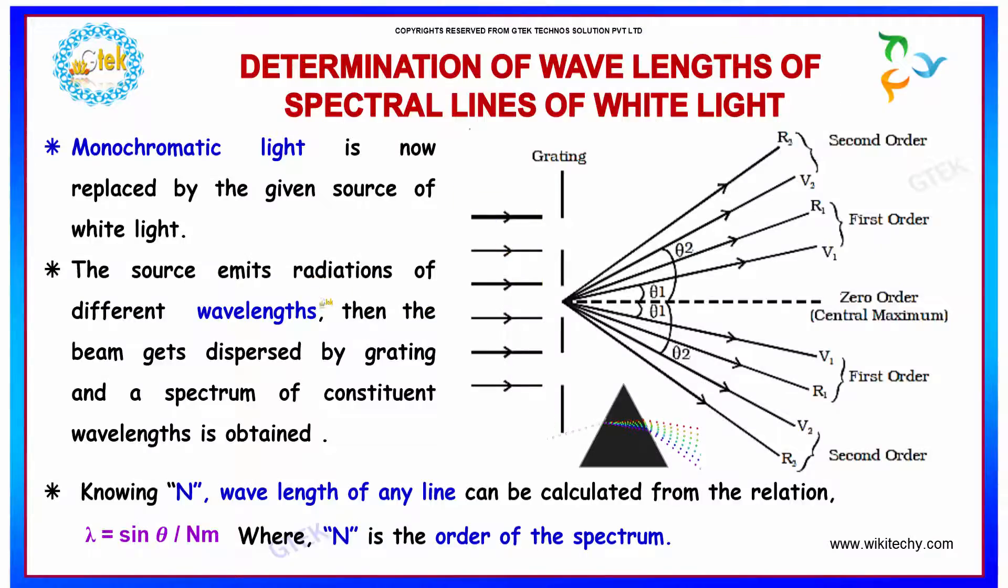The source emits radiation of different wavelengths when the beam gets dispersed by the grating and a spectrum of constituent wavelengths is obtained.